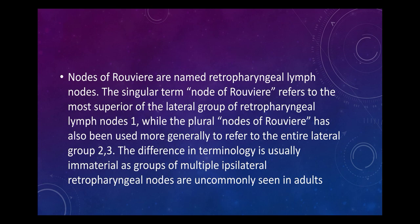Nodes of Rouvier are named retropharyngeal lymph nodes. The singular term 'node of Rouvier' refers to the most superior of the lateral group of retropharyngeal lymph nodes, while the plural 'nodes of Rouvier' has also been used more generally to refer to the entire lateral group. This distinction is usually immaterial as groups of multiple ipsilateral retropharyngeal nodes are commonly seen in adults.